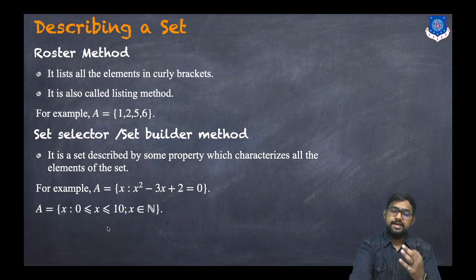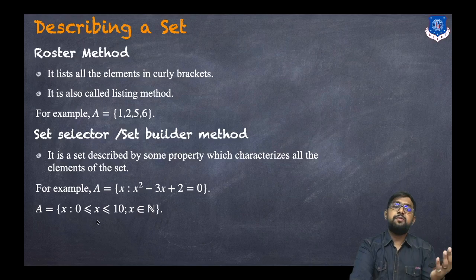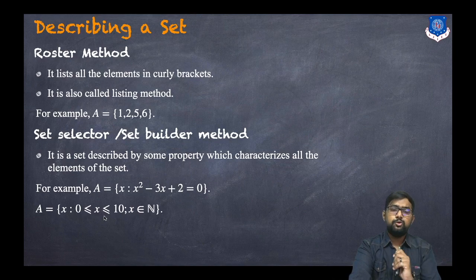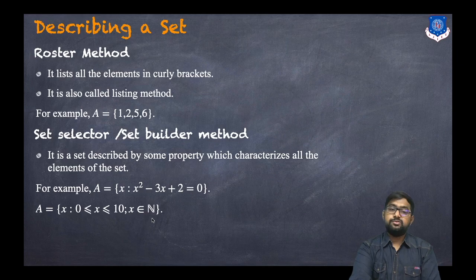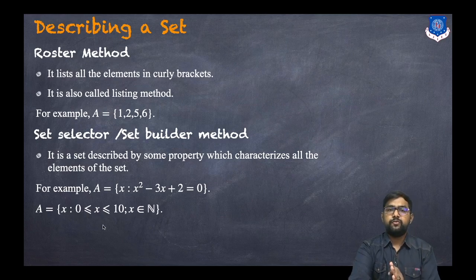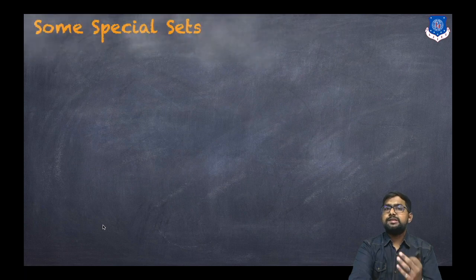A second example: the set of all x such that 0 ≤ x ≤ 10 and x belongs to N (natural numbers). Since the set of natural numbers does not include zero, the elements will be from 1 to 10.